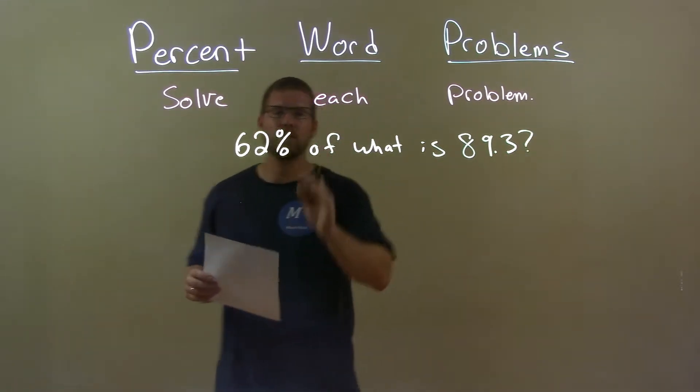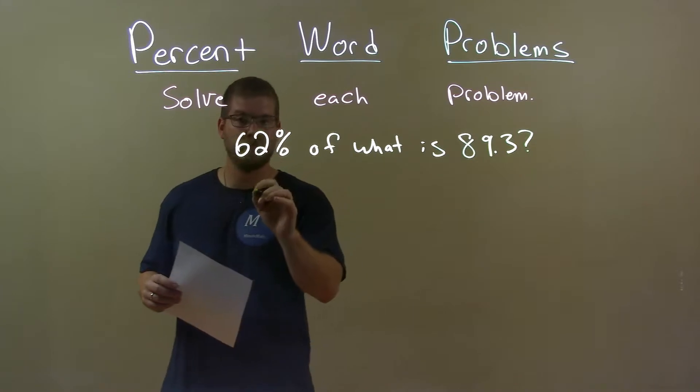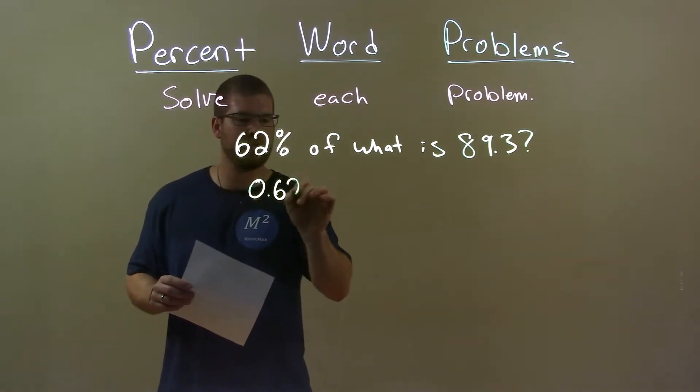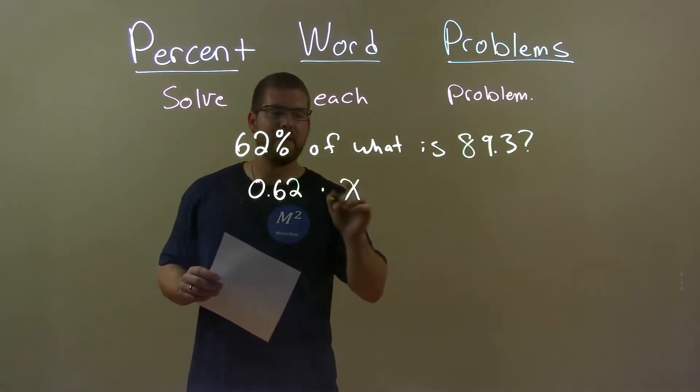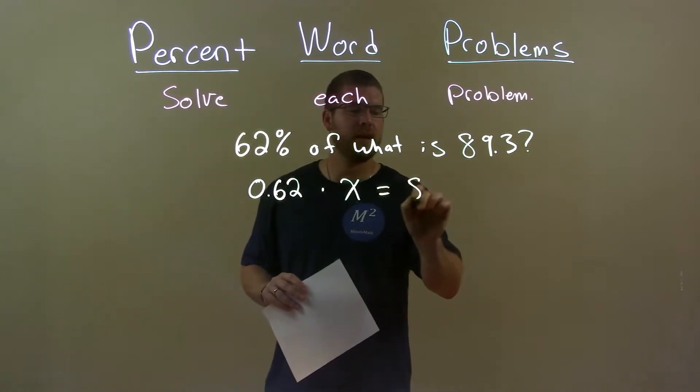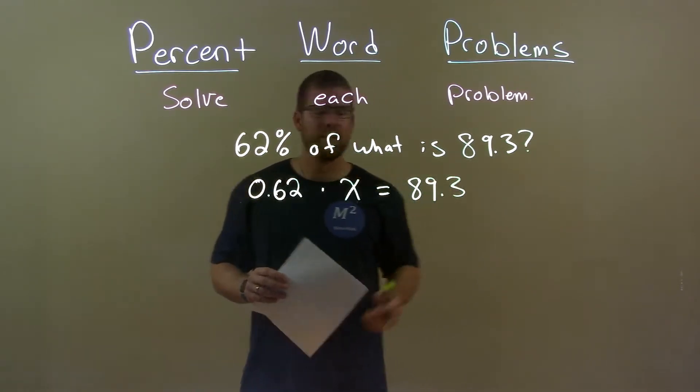Well, first let's write this as an equation. 62% decimal 0.62 of what, my variable x, is equals sign 89.3, okay?